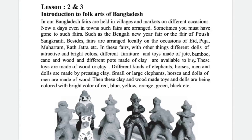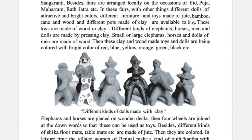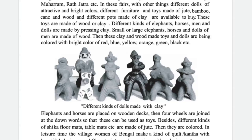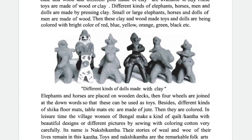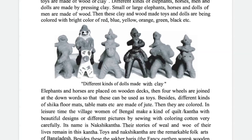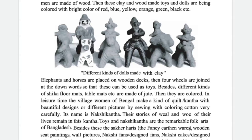Those clay and wood made toys and dolls are colored with beautiful colors like red, blue, yellow, orange, green, black, etc. In this space there are different kinds of dolls made with clay — elephants with a person, horses, different kinds of colorful horses. Sometimes they look black. Elephants and horses are placed on wooden decks and four wheels are joined at the bottom so that those can be used as toys.